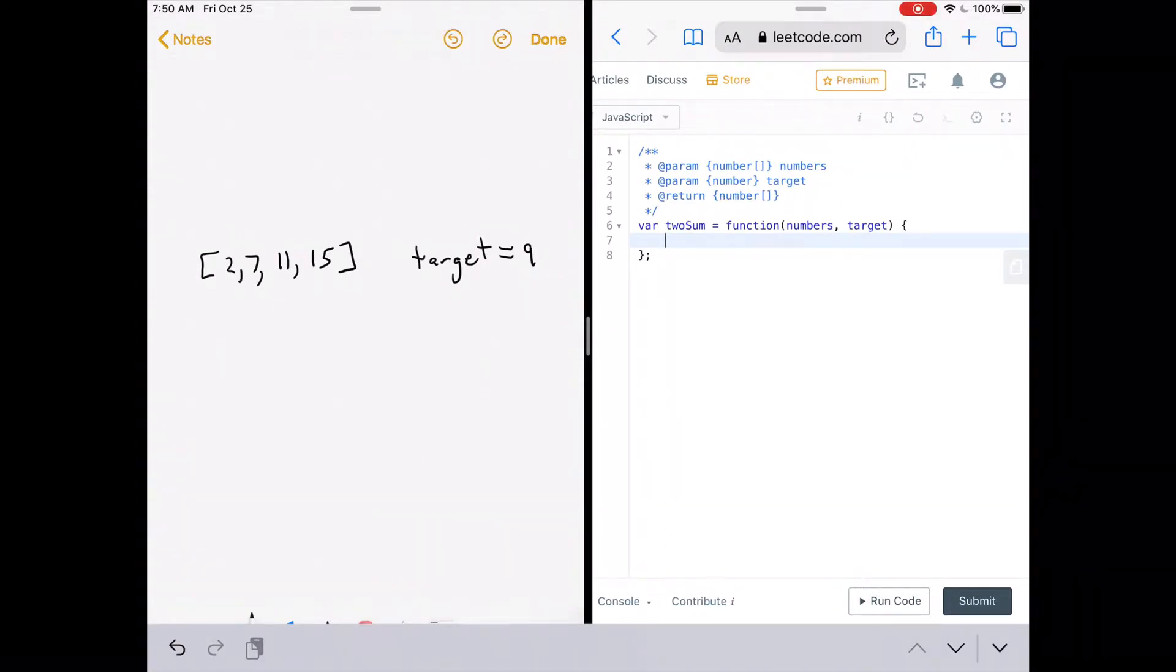All right, what LeetCode has given us is a function called twoSum, which accepts numbers, which is the sorted array, and the target, which is what two elements in the sorted array need to add up to. All right, so remember, the first thing we need to do is make two pointers. So let left pointer equal zero. That would be here. And let right pointer equal numbers dot length minus one.